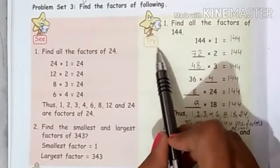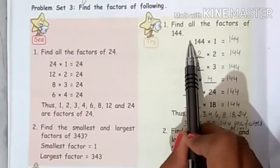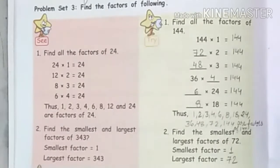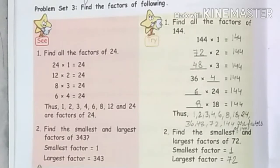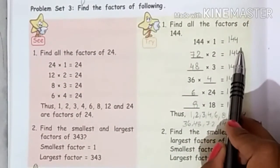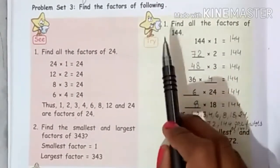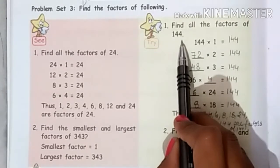First of all, we will do the try part. Question number 1: Find all the factors of 144. I have to tell you that 1 is always a factor. And the number itself, 144, will be the largest factor. Because it is even number, 144 is even number.